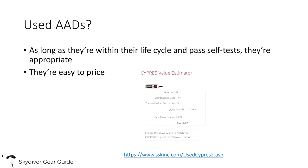This video was made in May 2020. There is one significant service bulletin for Vigils manufactured in a certain time range with a certain serial number or software version — they need their software updated because they may turn off during a high-altitude jump. There's no problem with buying a used AAD so long as it's within its lifespan and has been properly serviced, or you're going to send it in to get serviced. Some websites have calculators where you input the manufacture date and model number to get a fair price. AADs are pretty consistent in pricing based on remaining lifespan, though market forces may affect price slightly.